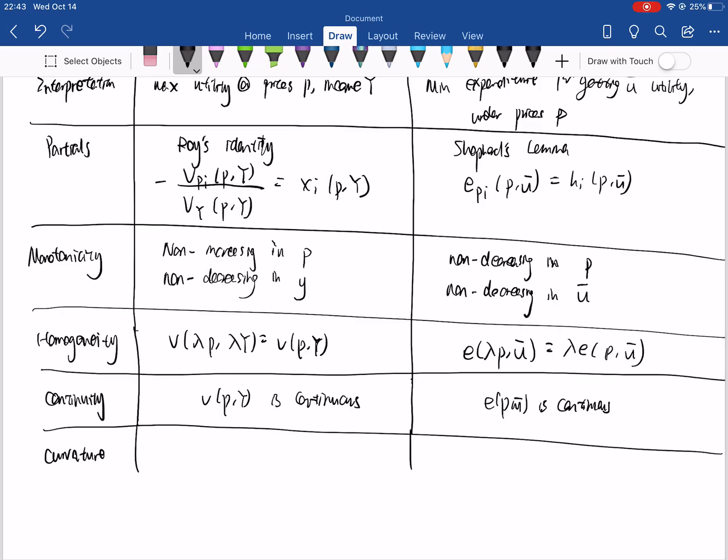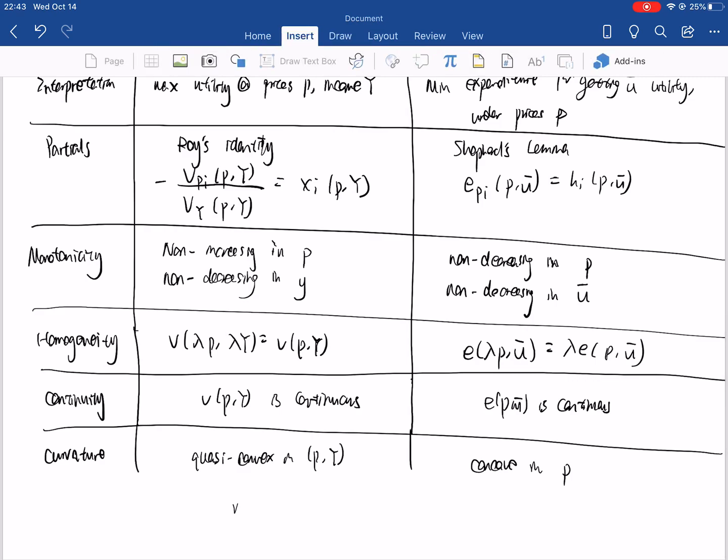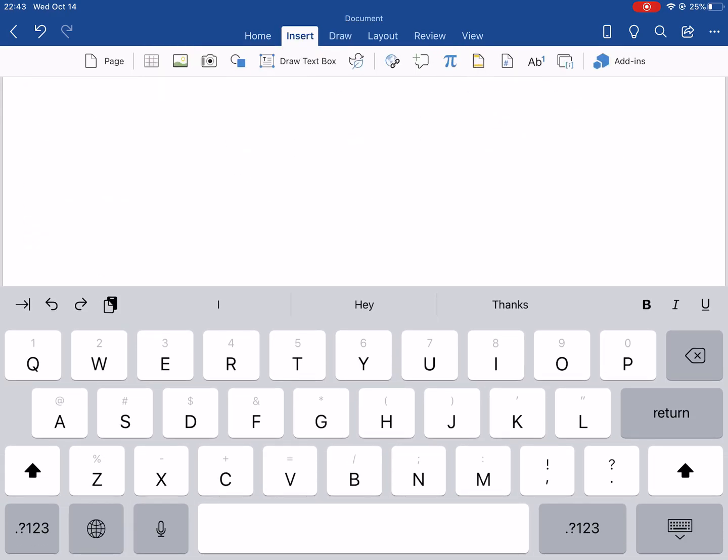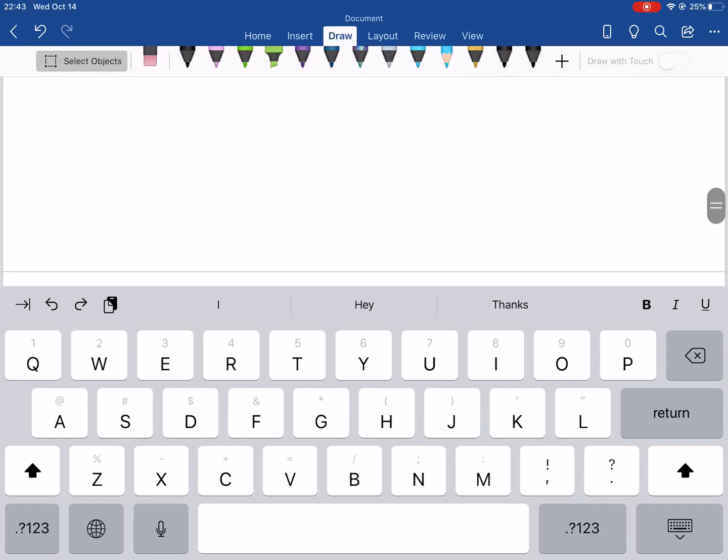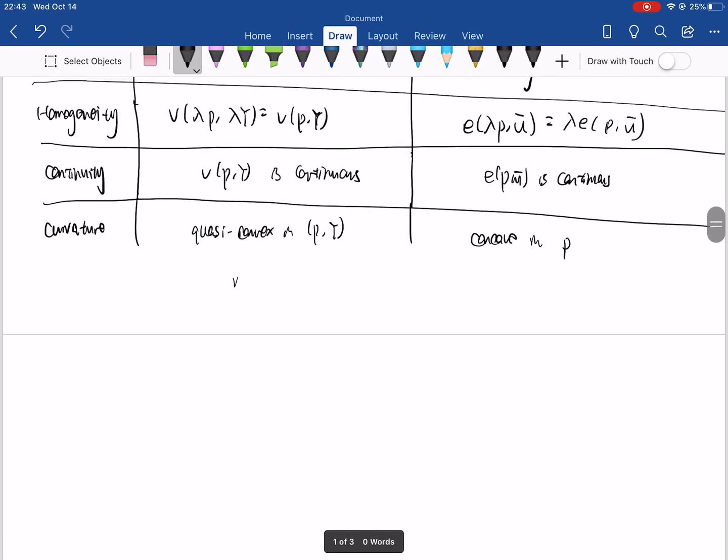The indirect utility function is quasi-convex in p or in both prices and income, and the expenditure function is concave in p. So remember our definition for concavity was that if you take an arithmetic average of two points on the function, you would get something that if you were to put that average into your function itself.